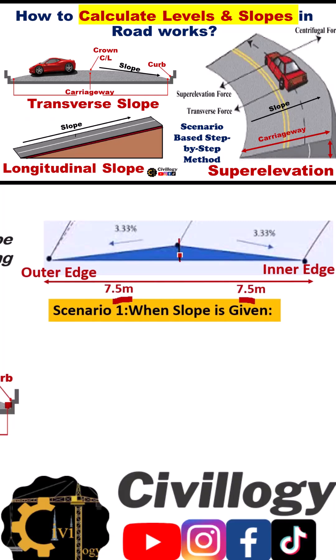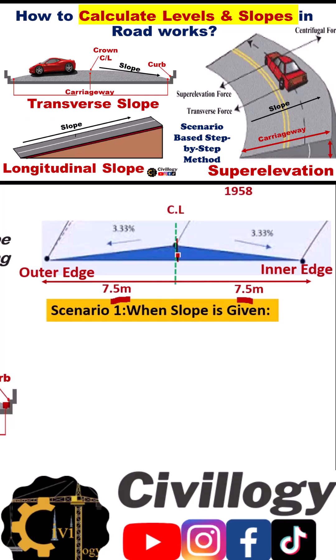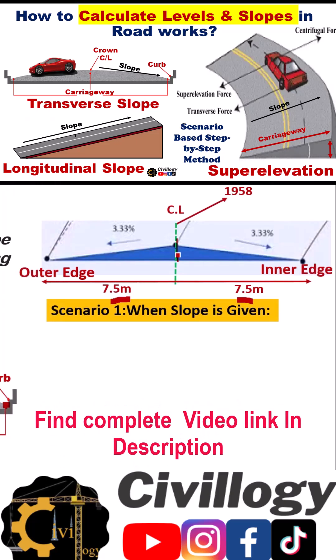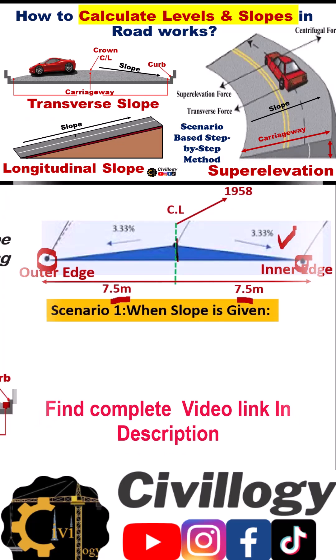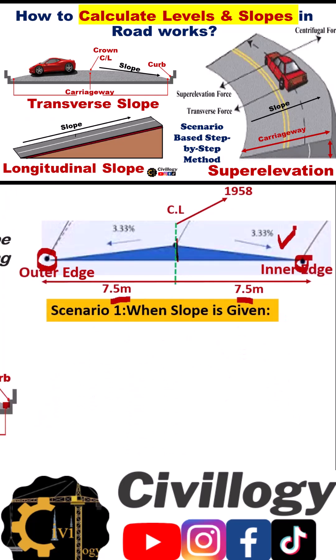Scenario number one: when slope is given and centerline levels are known to you, which is 19.58 in this case. How to calculate the levels of the edges of the road — the slope is 3.33%, as you can see in this diagram.